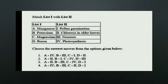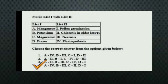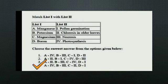The next is a match the following. List 1 consists of Manganese, Potassium, Magnesium, and Boron. List 2 consists of Pollen germination, Chlorosis in older leaf, Necrosis, and Photosynthesis. The right answer is Option 4: Manganese helps in photosynthesis, Potassium is associated with necrosis, Magnesium with chlorosis in older leaf, and Boron with pollen germination.